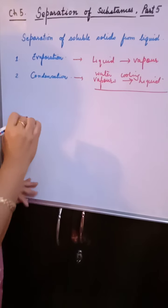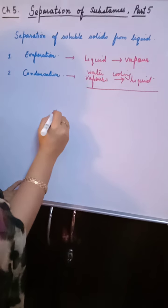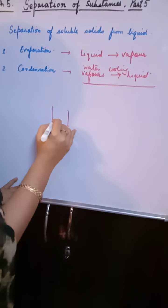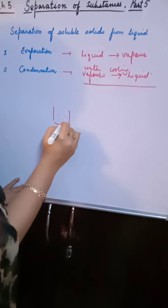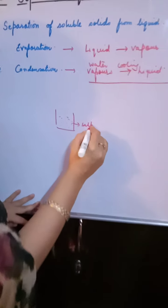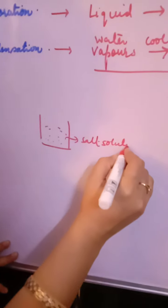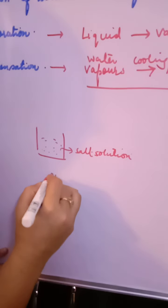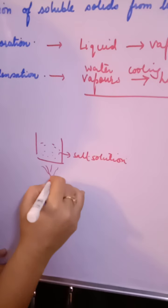The concept of evaporation and condensation will be more clear when I give you one example. Suppose you have a beaker in which you have dissolved salt in water. So this is a salt solution with us.